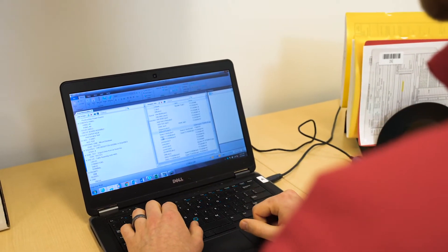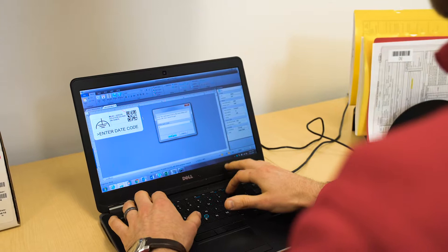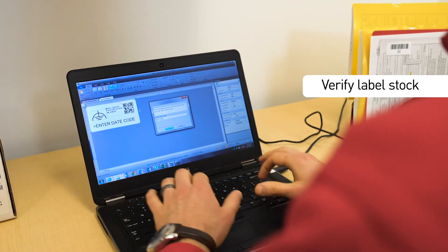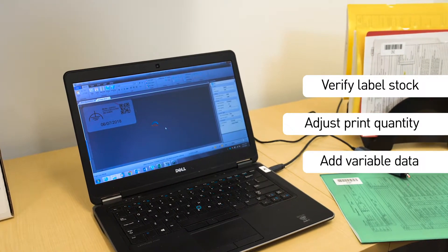Just add one or more smart prompts, which pop up before printing, to remind the operator to verify label stock is loaded, ask for a quantity, enter a date code, you get the idea.